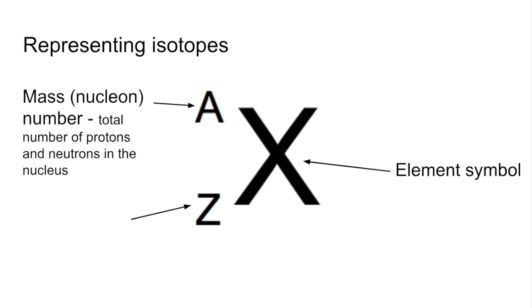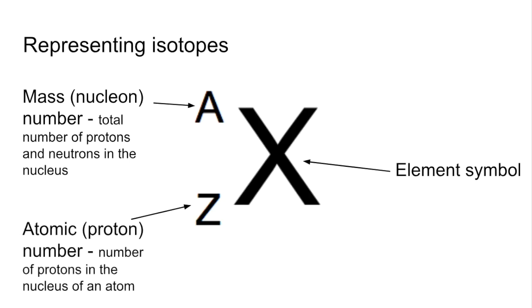The A is the mass number or the nucleon number and that tells us the total number of protons and neutrons in the nucleus. The Z is the atomic number or the proton number and that tells us the number of protons in the nucleus of the atom.